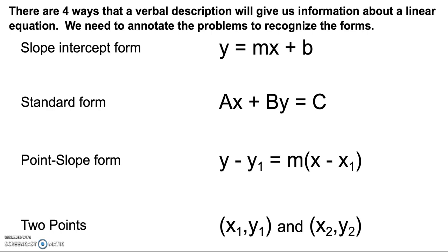There are four ways that a verbal description will give you information about a linear equation. We're going to need to annotate the problems to recognize which of the forms it's really giving us. This first video is going to be about the slope-intercept form and standard form versions, and then the next video will be about point-slope form and the two-points versions.